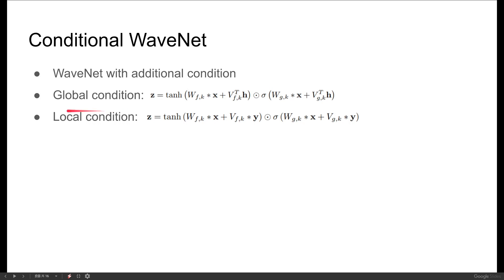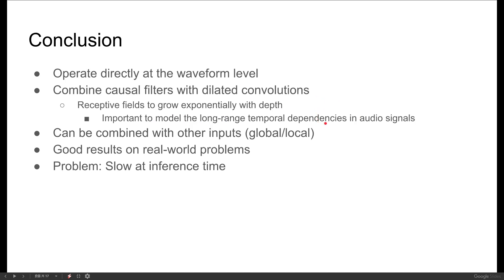如果今天給的condition不是像spectrogram這種隨時間變化的，而是比如說speaker ID、希望產生某一個speaker的聲音、告訴他產生的是什麼語言、或是某一段話的情緒，也就是整段聲音裡面不變的condition，我們叫做global condition。加進去的方法也是一樣的。以上就是WaveNet的架構以及如何拿來用作vocoder的部分。